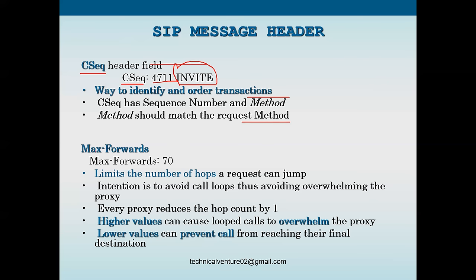Max-Forwards starts at 70 and limits the number of hops a request can traverse. When User Agent 1 sends a request to a proxy server, it contains Max-Forwards: 70. Each proxy server reduces it by one - so after one hop it becomes 69, then 68, and so on. The purpose is to avoid call loops and prevent overwhelming the proxy. Higher values can cause looped calls to overwhelm the proxy; lower values can prevent calls from reaching their destination.